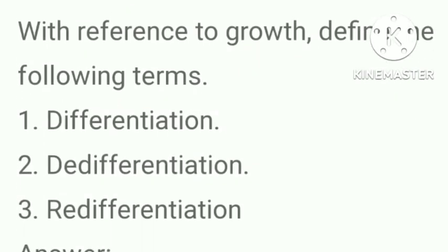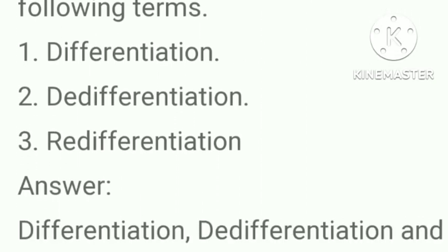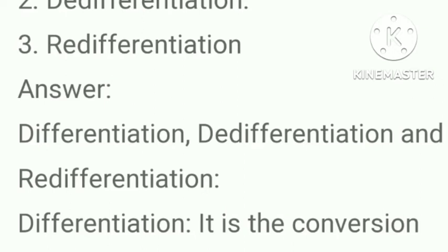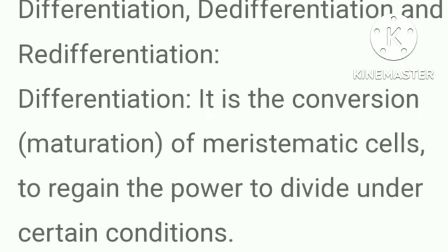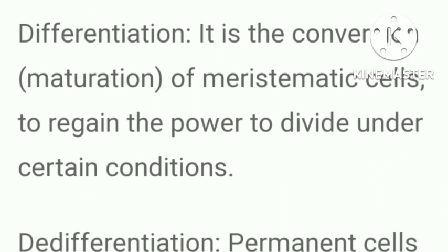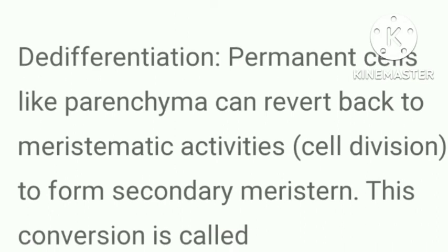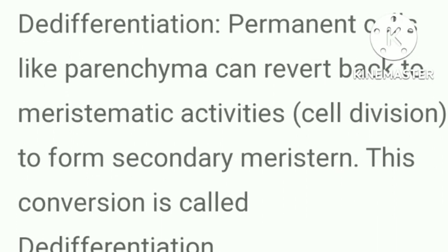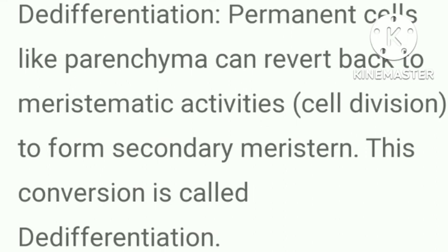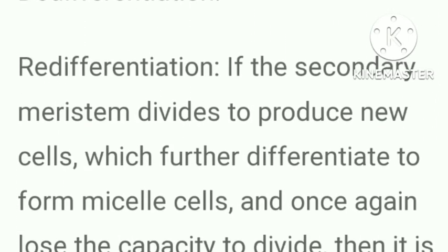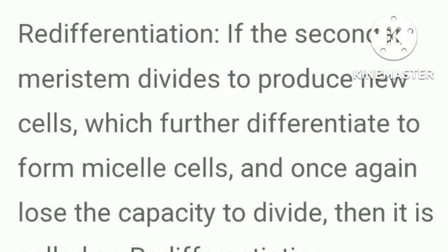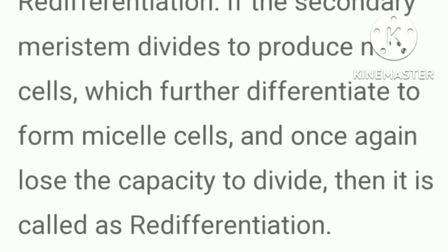With reference to roots, define differentiation, dedifferentiation, and redifferentiation. Differentiation is the conversion and maturation of meristematic cells. Dedifferentiation is when permanent cells like parenchyma revert back to meristematic activity and cell division to form secondary meristems. Redifferentiation is when the secondary meristem divides to produce new cells which further differentiate to form mature cells and once again lose the capacity to divide.